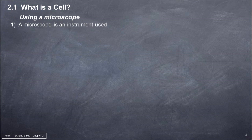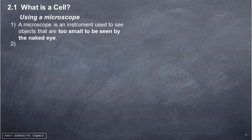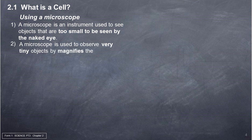5. Using a Microscope. 1. A microscope is an instrument used to see objects that are too small to be seen by the naked eye. 6. A microscope is used to observe very tiny objects by magnifying the image of the objects through a series of magnifying lenses.